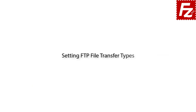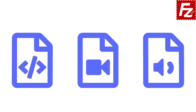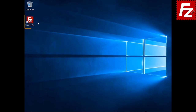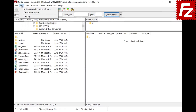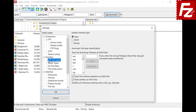In this tutorial you will learn how to configure FTP transfer types with FileZilla and FileZilla Pro. Launch FileZilla or FileZilla Pro. FTP transfer can be of two types: ASCII or binary.